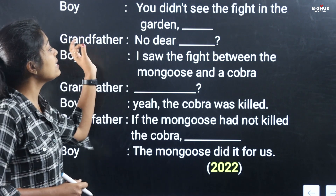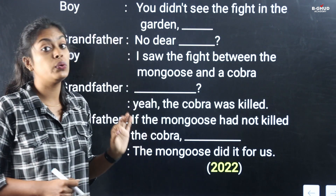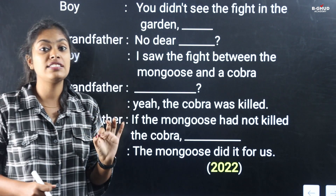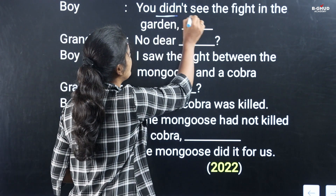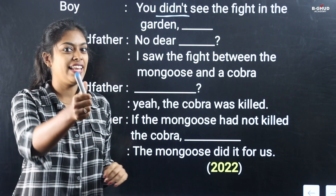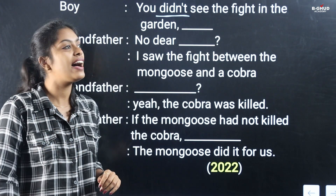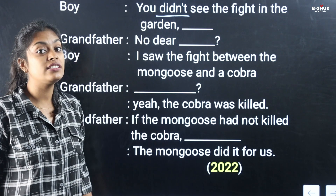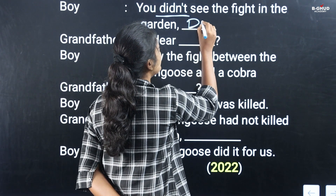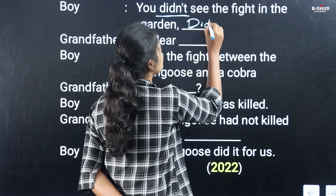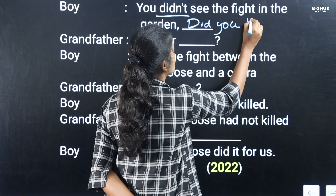Next example: 'You didn't see the fight in the garden.' This is negative, so the question tag is positive — 'did you?' So: 'You didn't see the fight in the garden, did you?'